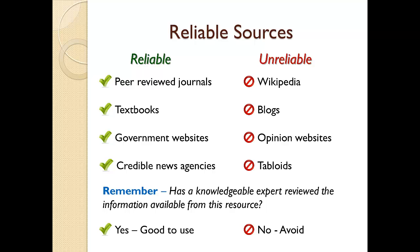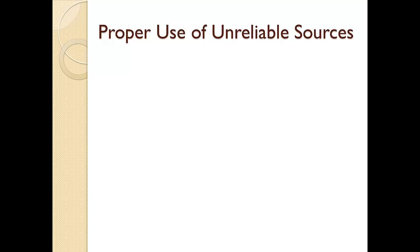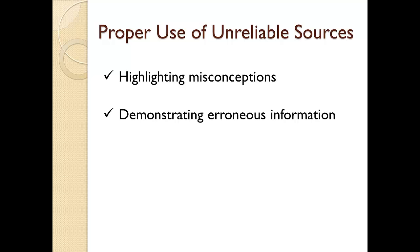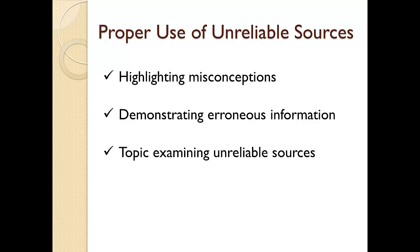There are a few exceptions when it might be appropriate to use information from a source that is normally considered unreliable. For example, if you want to highlight some existing misconceptions on a topic, you might cite information from unreliable sources, being careful to note this is what you are doing. Another similar example would be to demonstrate the existence of erroneous information. A final example would be a situation where you are writing a research paper or conducting a research study on the topic of unreliable sources of information. To successfully discuss this type of topic, you would need to incorporate information from these types of sources.